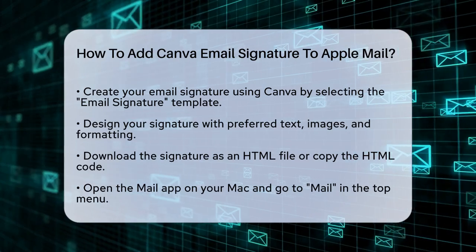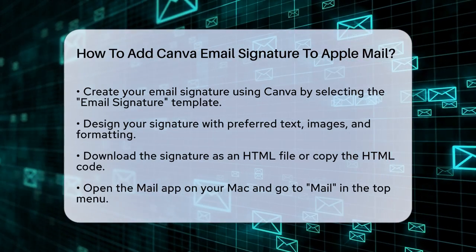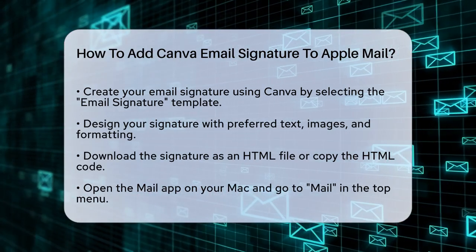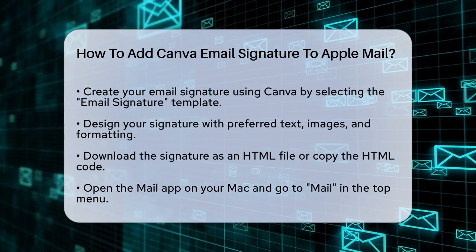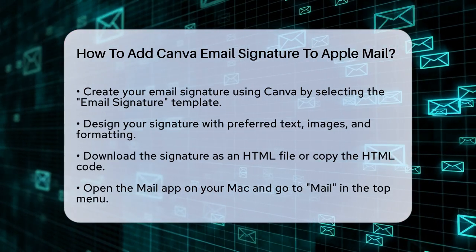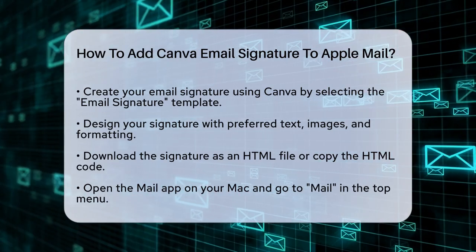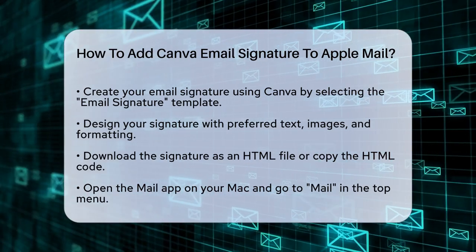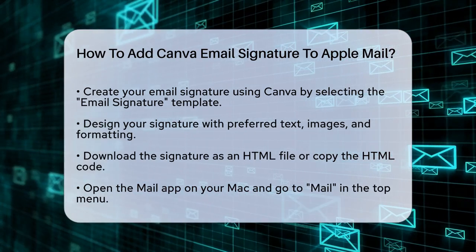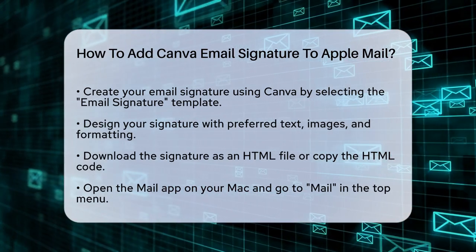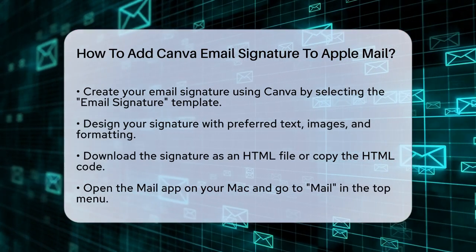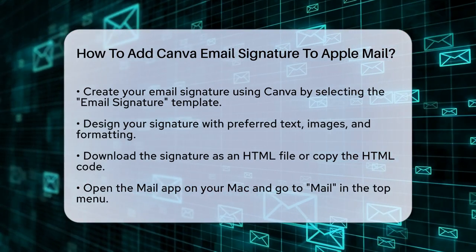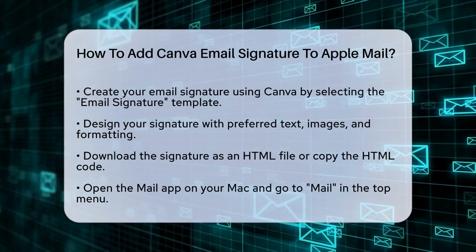First, you need to create your email signature using Canva. Open Canva, select the Email Signature template, and design your signature with the text, images, and formatting you like. Once you're happy with your design, download the signature as an HTML file or copy the HTML code.